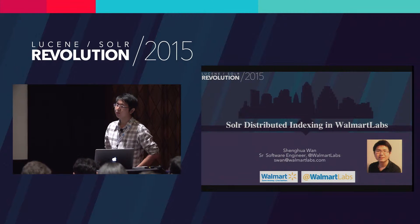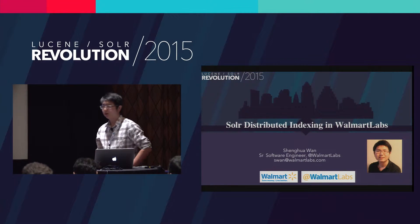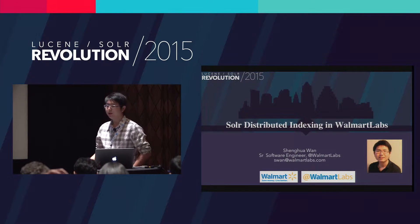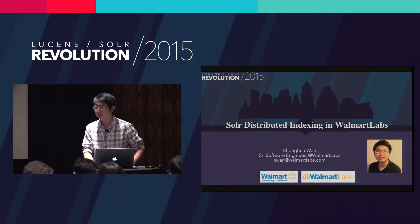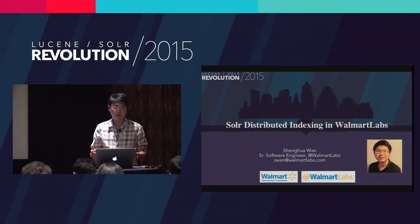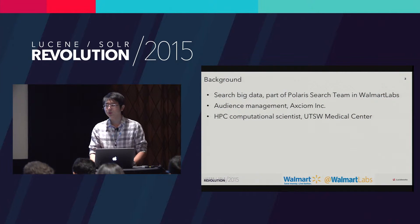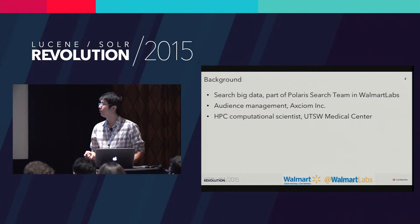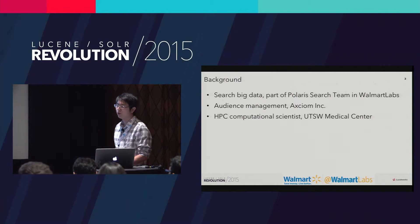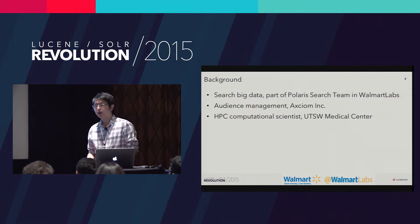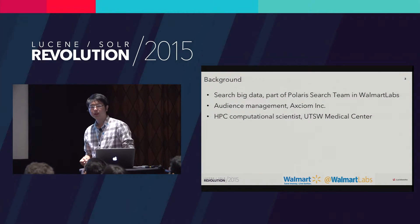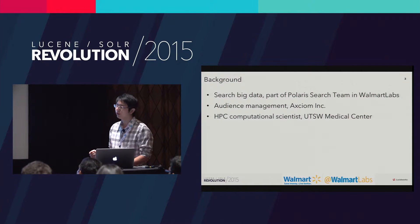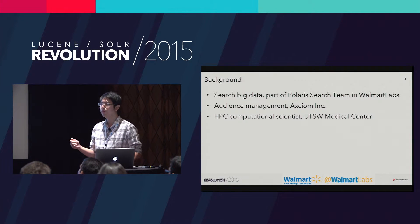Hello, my name is Sunhua Wan. I'm from Walmart Labs, and today's topic is Solr distributed indexing in Walmart Labs. I'm going to share some experience when we deal with distributed indexing using Solr. I want to introduce a little bit about my background — I'm actually a big data guy. I work in the search big data team inside the Polaris search team in Walmart Labs. Our goal in the search team is to let the customer find what they want, and maybe what they might want as well.